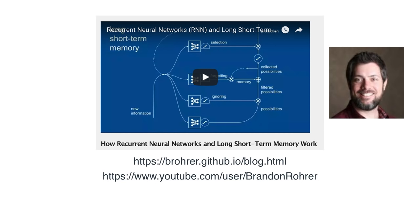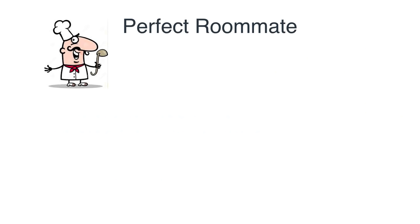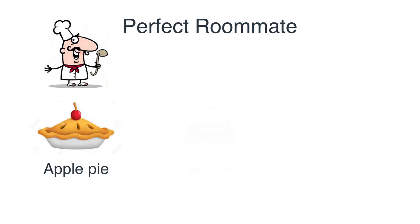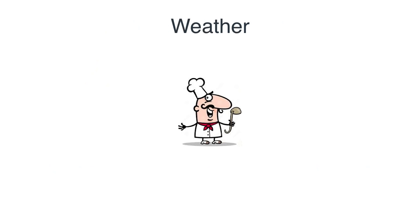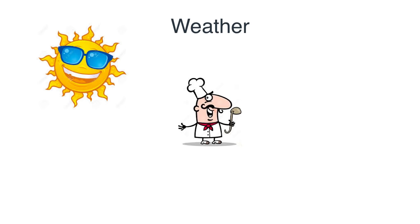The example is inspired by one of his examples and it goes like this. You have a roommate — the perfect roommate. Why is he the perfect roommate? Because he cooks every day. He cooks three types of foods: apple pie, a burger, and chicken. And he has a rule for what he cooks — he first looks outside at the weather, and it can be sunny or rainy.